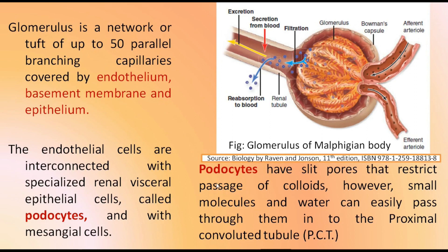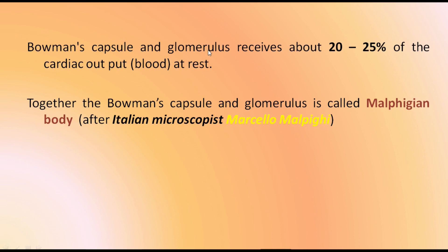Podocytes have slit pores that restrict the passage of colloids; however, small molecules and water can easily pass through them into the proximal convoluted tubule. This is the glomerulus containing the endothelium, basement membrane, and epithelium — this is the Bowman's capsule, with the afferent arteriole bringing blood in and the efferent arteriole taking blood away. The Bowman's capsule and glomerulus together receive about 20 to 25 percent of the cardiac output at rest. Together the Bowman's capsule and the glomerulus are called the Malpighian body, named after Italian microscopist Marcello Malpighi.